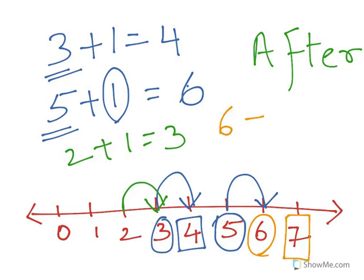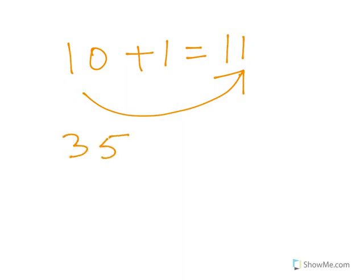With this after number concept, kids can easily do additions like 10+1=11, as 11 comes after 10, then 35+1=36, as 36 comes after 35.